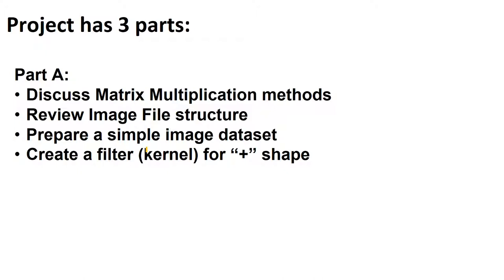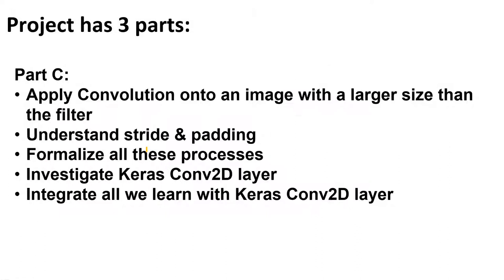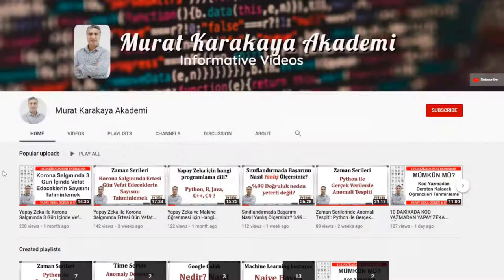Welcome back. This is part C of a 3-video series about convolution. In part A, we discussed matrix multiplication methods, reviewed image file structure, prepared a simple image dataset, and created a filter — a kernel — for a plus shape. In part B, we talked about convolution as element-wise matrix multiplication and summation, and tested the algorithm with different images. In part C, we will talk about the convolution layer, apply convolution to images larger than the filters, understand stride and padding, formalize these processes, investigate Keras's Conv2D layer, and integrate everything learned with Keras Conv2D.